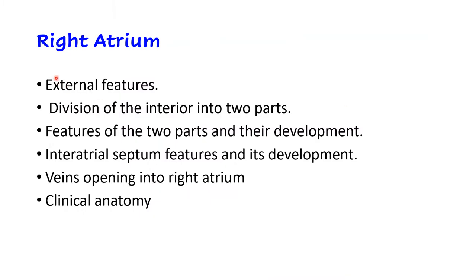In exams, if you get a question to write a short note on the right atrium or its internal features, you should write under these headings: briefly describe external features, then the division of the interior into two parts and features of those two parts with brief development, then the interatrial septum with its features and brief development, then veins opening into the right atrium, and finally the applied or clinical anatomy.